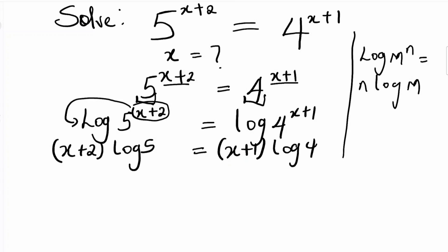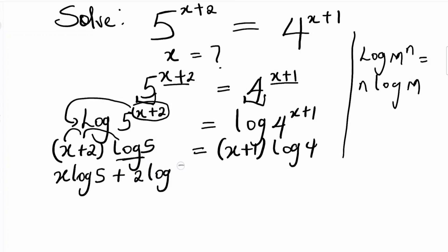This is the main reason why we took the logarithm of both sides. So in that case, we are going to use log 5 to open the bracket — log 5 times x will give you x·log 5, and log 5 times 2 will give you 2·log 5. And that is equal to log 4 times x, which gives x·log 4.